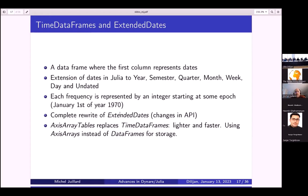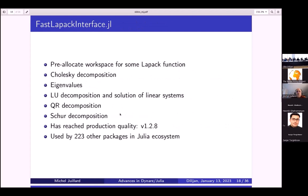FastLapackInterface is very low level, deals with very low level computation. Its main contribution is to pre-allocate the workspace rather than allocate workspace every time you call the function as it was by default currently in Julia. That package is the one that is the most achieved and it is already used directly by one or two and indirectly by 223 other packages in the Julia ecosystem. So there our efforts benefited other Julia users independently from Dynare.